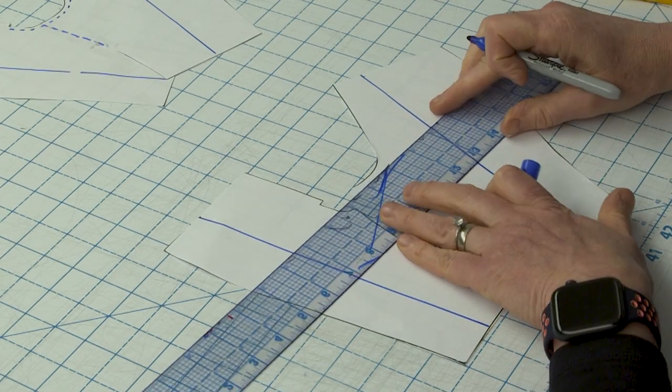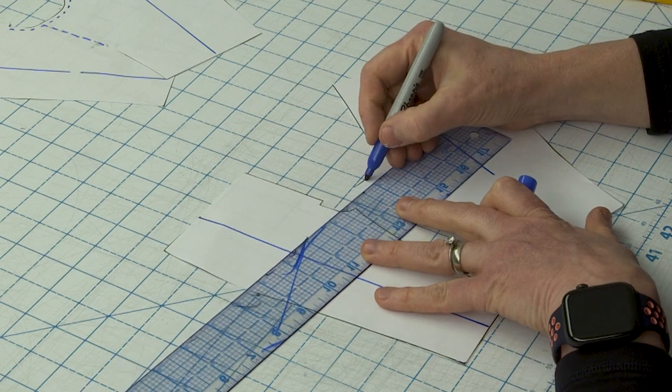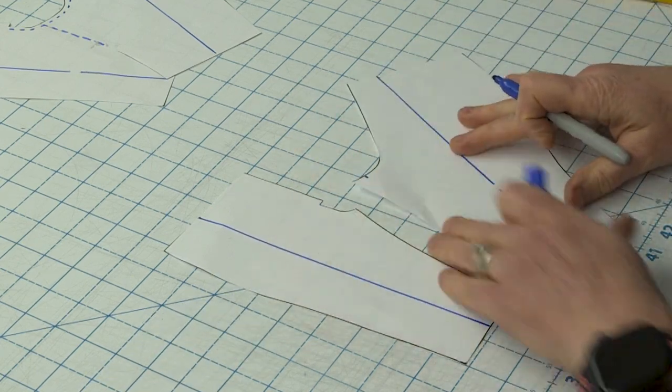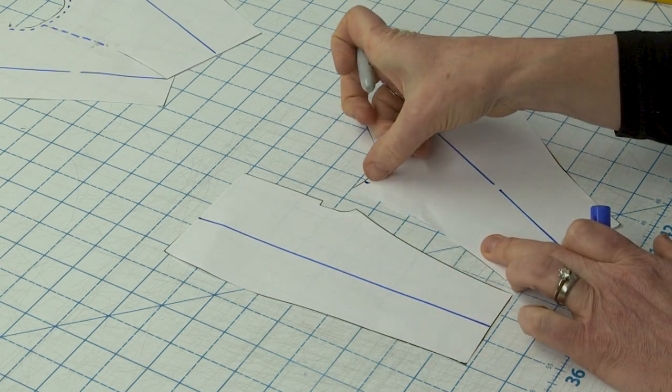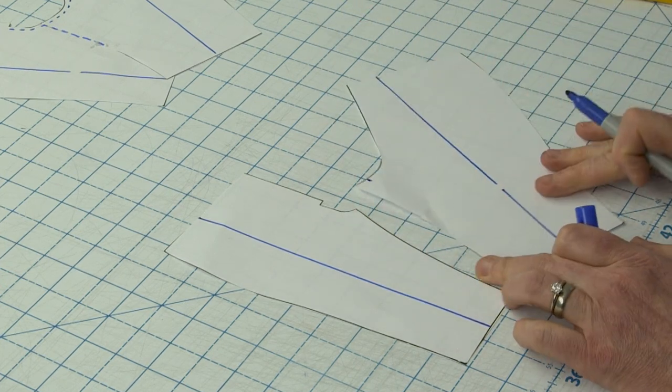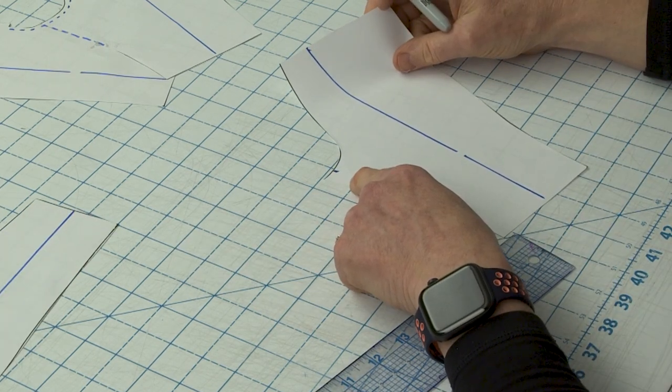So the first thing you want to do here is decide how much you want to push your inseam to the back. And typically, from working with my students, that ranges anywhere from a half an inch to an inch. So the first step is you're going to work with your back leg pattern piece and you're going to measure an inch or a half an inch, whatever it is, from the tip of the crotch along your back crotch curve. So that would be the amount that I want to shift forward. So that's how much we're going to shift at the top of the inseam.